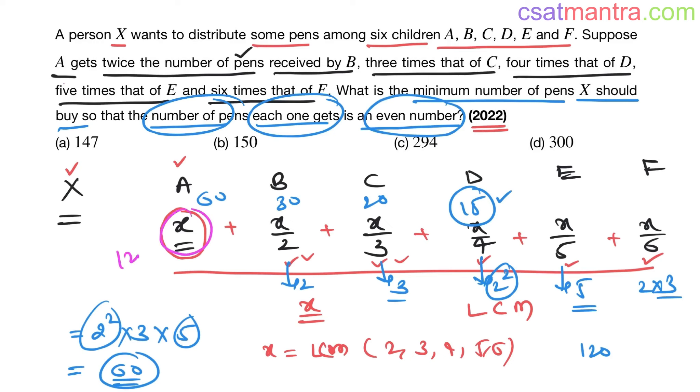Now 120. 120 by 2, 60. 120 by 3, 40. 120 by 4, 30. 120 by 5, 24. 120 by 6, how much? 20. Everyone is getting even number of pens. So X should be 120.